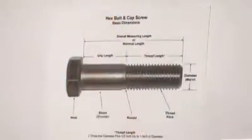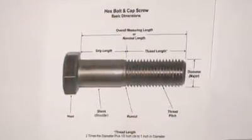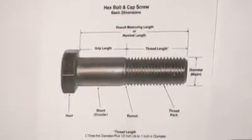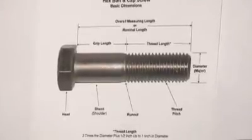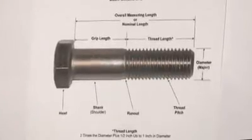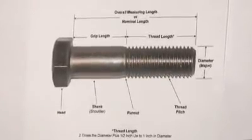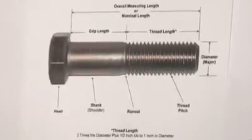You take the diameter of the bolt, multiply two times the diameter, plus you add a half inch — for bolts up to one inch in diameter.